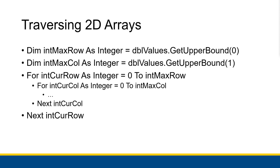We can traverse 2D arrays using nested loops. For example, we have intMaxRow and intMaxCol variables: maxRow equals the result of GetUpperBound(0) and maxCol equals the result of GetUpperBound(1). In the outer loop you go through the rows first, from 0 to maxRow. Then in the inner loop the column goes from 0 to maxCol, and then you do whatever you want on the inside.